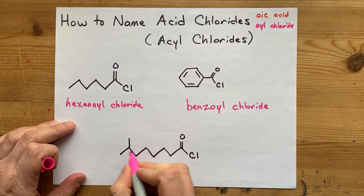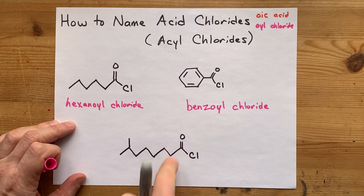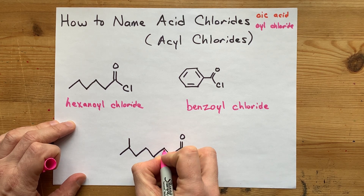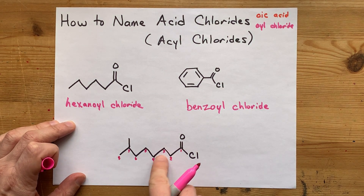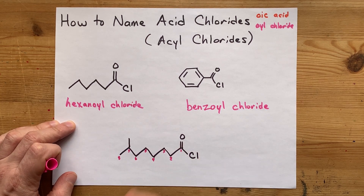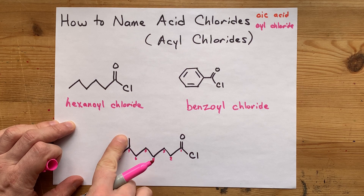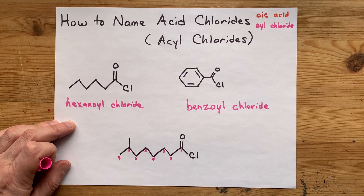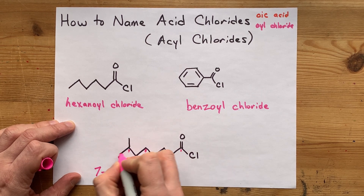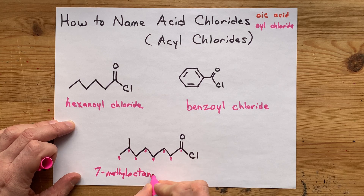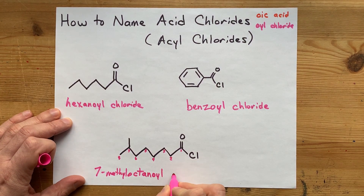Like carboxylic acids, the carbons are numbered for substituents from the carbon that has the double-bonded O on it — carbon 1, 2, 3, 4, 5, 6, 7, and 8. You can name substituents from these numbers the same way you would for an alkane, alkene, or carboxylic acid. Here we have an extra CH3, or methyl group, on carbon 7 of the 8-carbon chain. So this is 7-methyl, the 8-carbon chain means 'oct,' all single bonds means 'ane,' and because you have the double-bonded O with the Cl, it is octanoyl — 7-methyloctanoyl chloride.